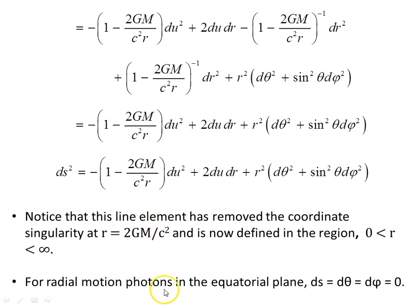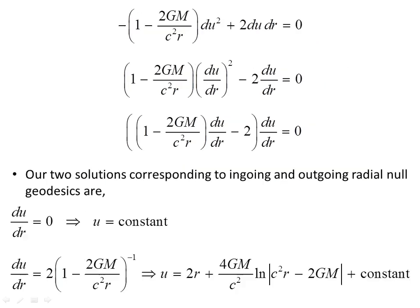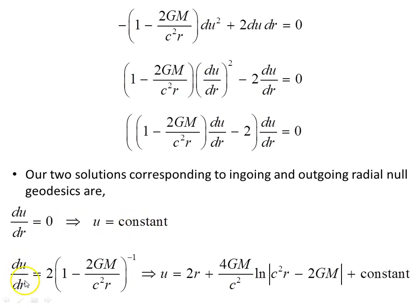For radial motion of photons in the equatorial plane, with d-theta and d-phi equal to zero and ds squared equal to zero for light, we solve to obtain du squared plus 2 du dr. Dividing through by dr squared and taking out a common factor of du/dr, the null factor law gives two solutions corresponding to ingoing and outgoing radial null geodesics: du/dr equals zero, implying u is constant — consistent with our construction — and the second solution du/dr equals this object, which when integrated gives u equals 2r plus 4GM/c² log of this object, plus a constant.